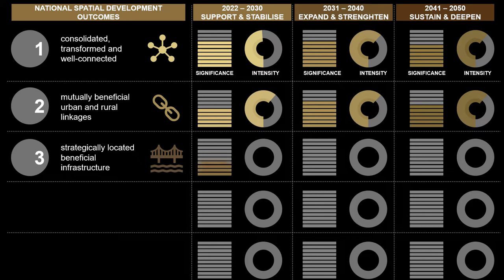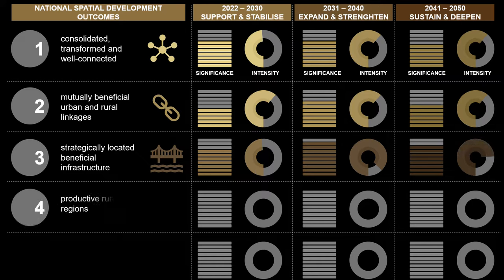National Spatial Outcome 3: national connectivity and movement infrastructure systems are strategically located, extended and maintained, to support a diverse, adaptive and inclusive economy, and a set of key national and regional gateway cities and towns.